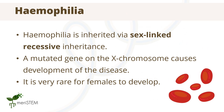Hemophilia is an example of a sex-linked recessive condition caused by the inheritance of a mutated gene on the X chromosome. This inherited bleeding disorder occurs due to issues in blood clotting, and happens most commonly in males than females due to the recessive nature of the condition.